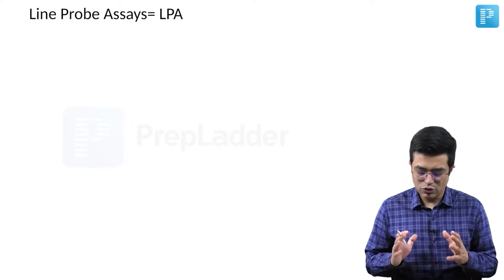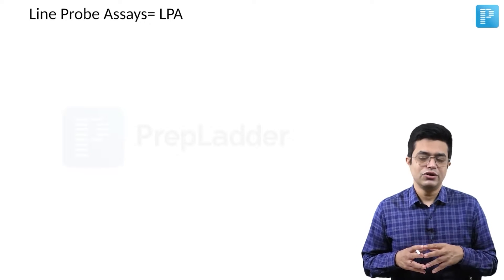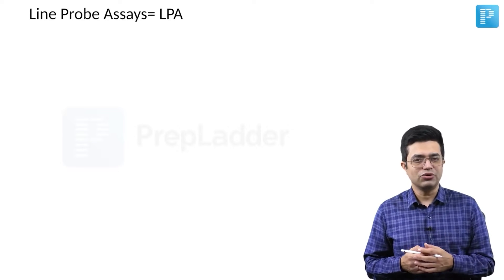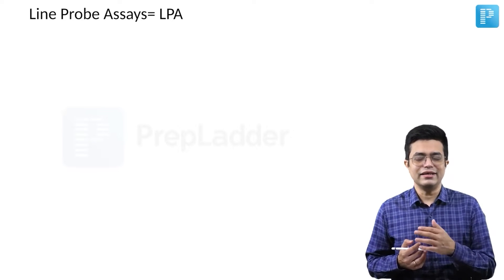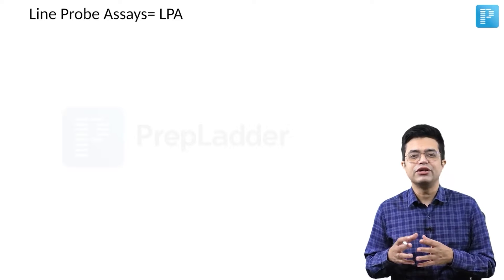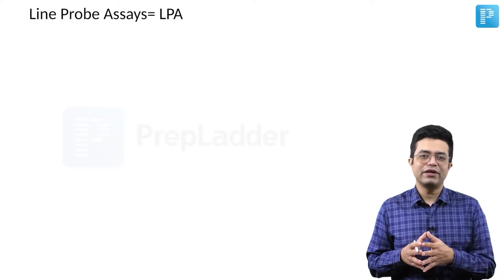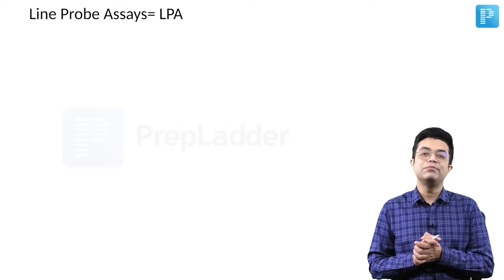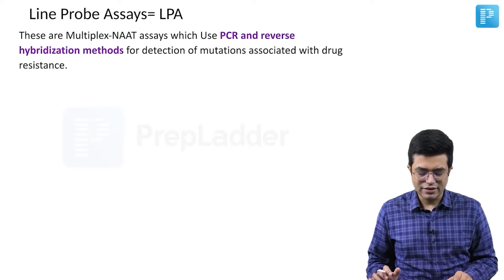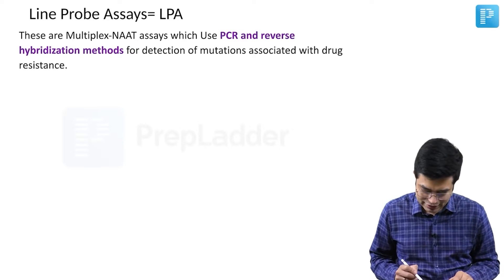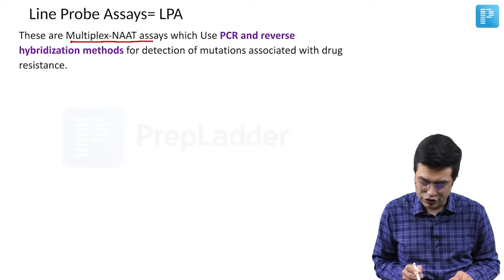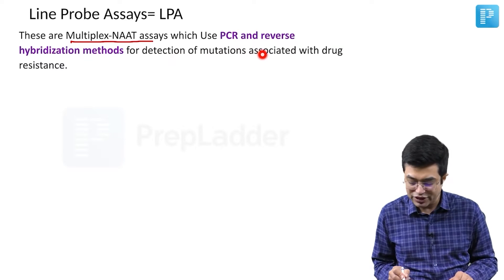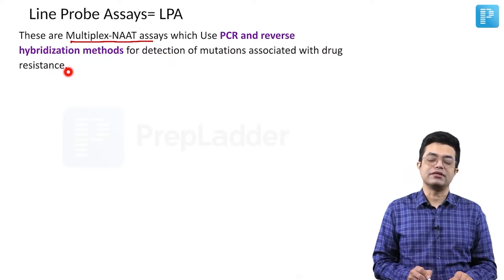There is a term called line probe assay that we need to understand. For microbiology these days we are using a test called NAAT, Nucleic Acid Amplification Test. Nucleic acid amplification has multiple types, and one variety is the line probe assay. They are multiplex NAAT assays which employ PCR and reverse hybridization methods for detection of mutations associated with drug resistance.